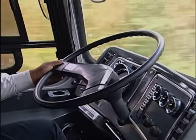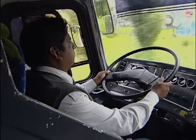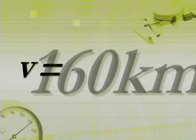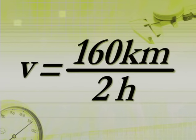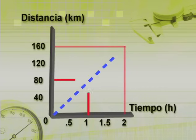Al viajar en autobús es importante saber a qué rapidez se viaja y hacia dónde se dirige uno. En este caso vamos a recorrer 160 kilómetros y el chofer nos ha indicado que llegaremos más o menos en dos horas. Si dividimos 160 kilómetros entre dos horas, sabemos que la rapidez que lleva el autobús es de 80 kilómetros por hora.